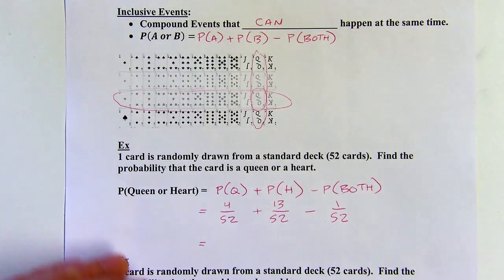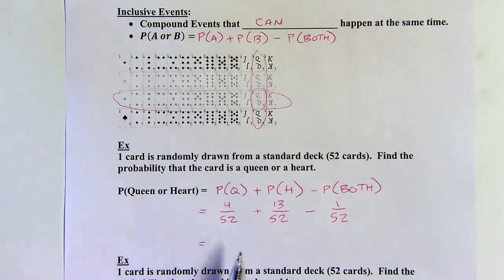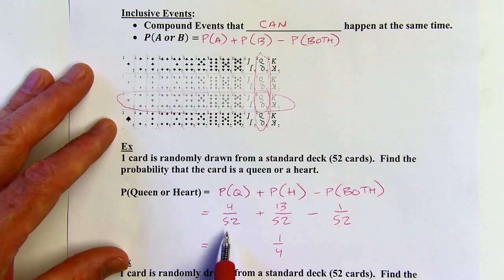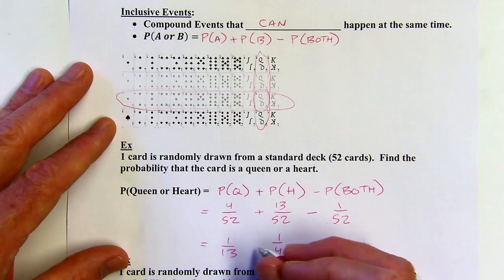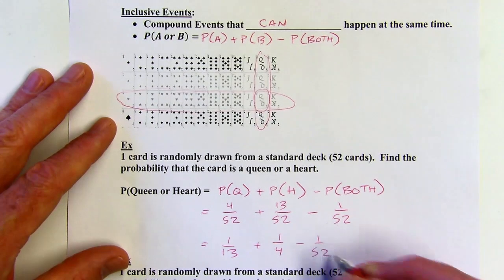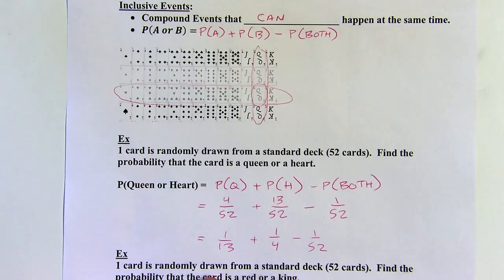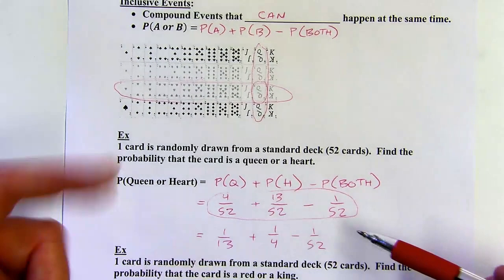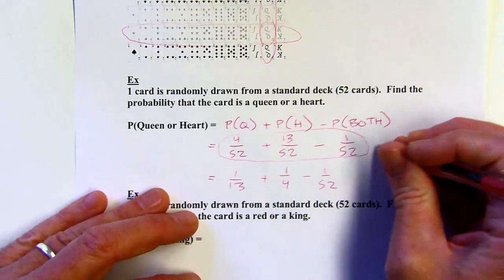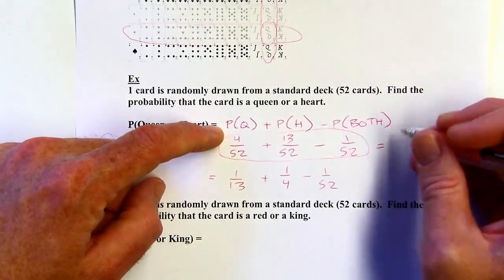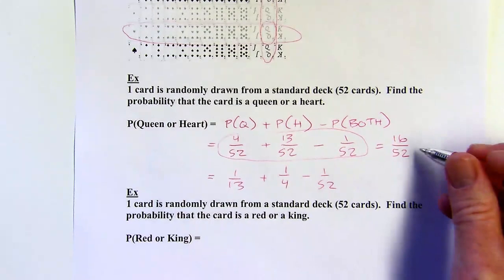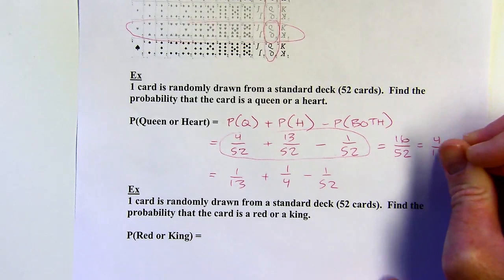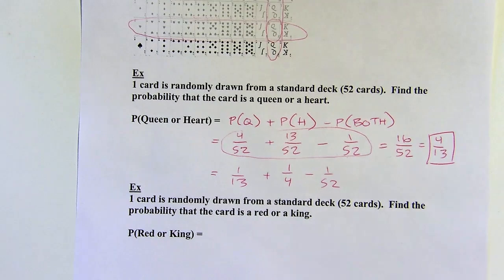It's better to keep fractions unreduced when adding and subtracting since they share a common denominator of 52. So 4 + 13 − 1 = 16, giving 16/52. Dividing both by 4 reduces to 4/13. That's the probability — about 4/13, or roughly 30.8%.